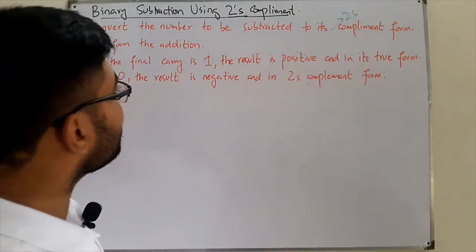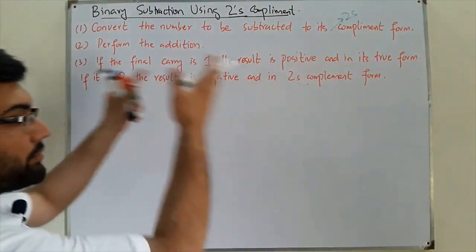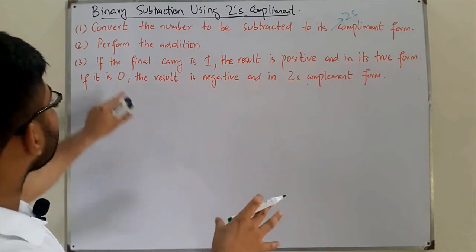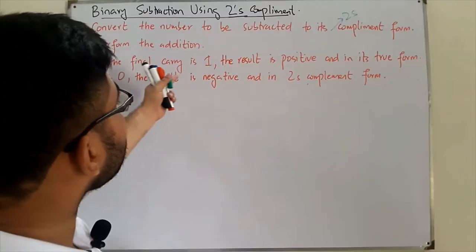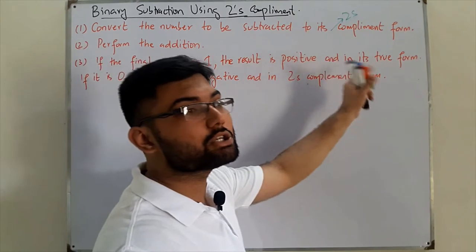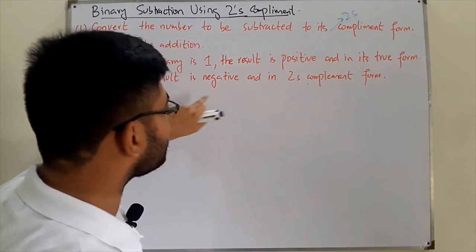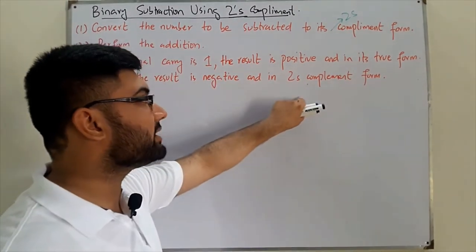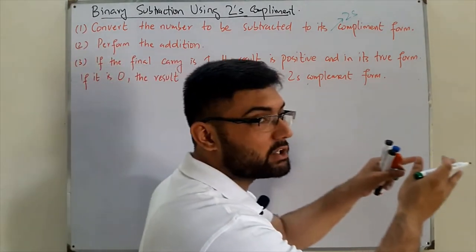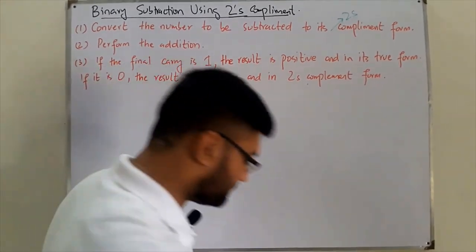Then perform the addition — add the complemented number with the number you are subtracting from. If the final carry is one, the result is positive and in its true form. If the final carry is zero, the result is negative and in its two's complement form, so you take the two's complement again to get the final result.